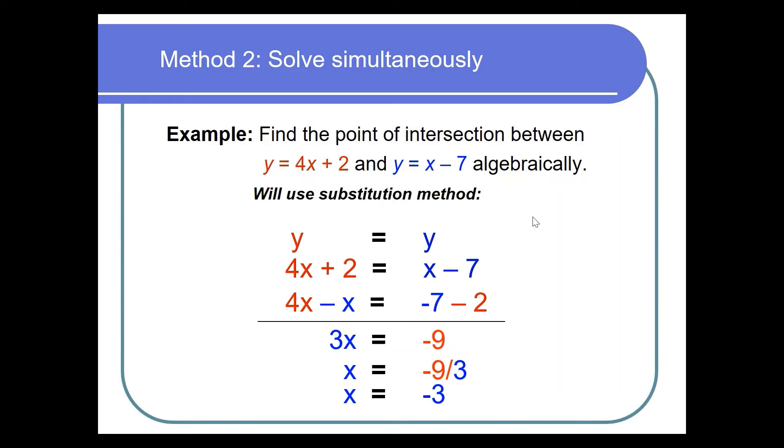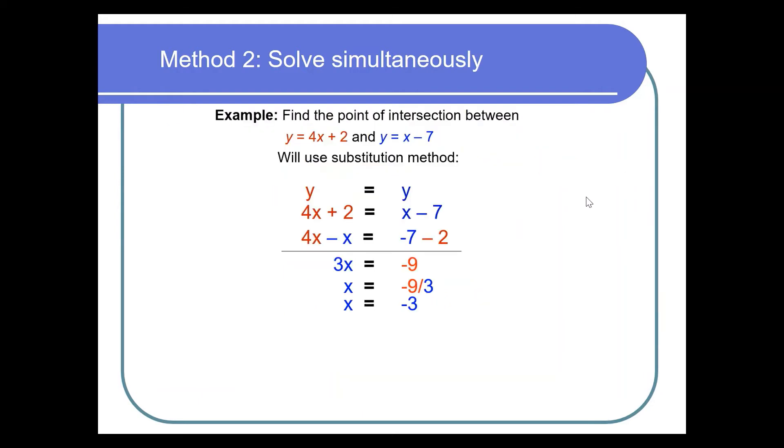Remember we want to find the point of intersection. Now point means we need x coordinate as well as the y coordinate. So this one is the x coordinate. So what we then need to do is find the y value. To get the y value we need to substitute the x value that we have just calculated, and we can use either of the two equations because this point is common to both equations.